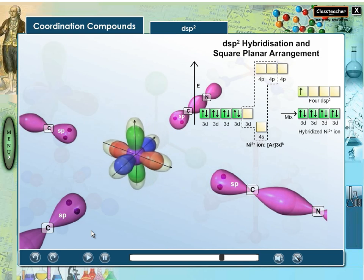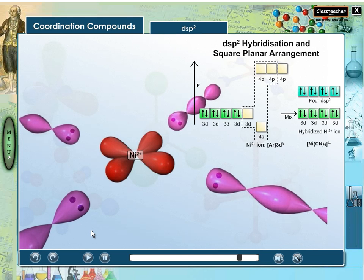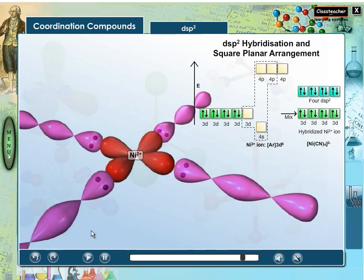One of the sp-hybrid orbitals of carbon in cyanide ions overlap with them to form 4 nickel cyanide bonds. Each cyanide ion donates a pair of electrons and forms nickel cyanide bond.